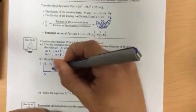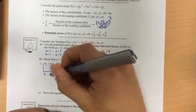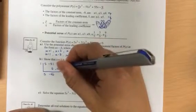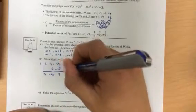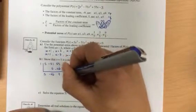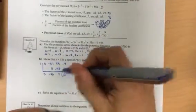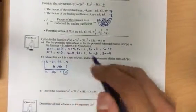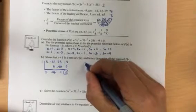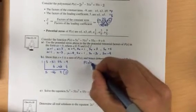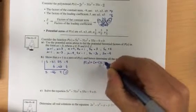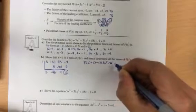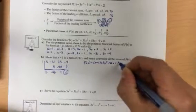So 5 minus 51 plus 55 minus 9. We bring down the 5. Negative 51 plus 5 would be negative 46. Negative 46 plus 55, we would have positive 9. 9 minus 9 would be 0. That's my remainder of 0, and so that means that x equals 1 or x minus 1 is a factor. And we could rewrite this then as p of x is equal to x minus 1 times 5x squared minus 46x plus 9.